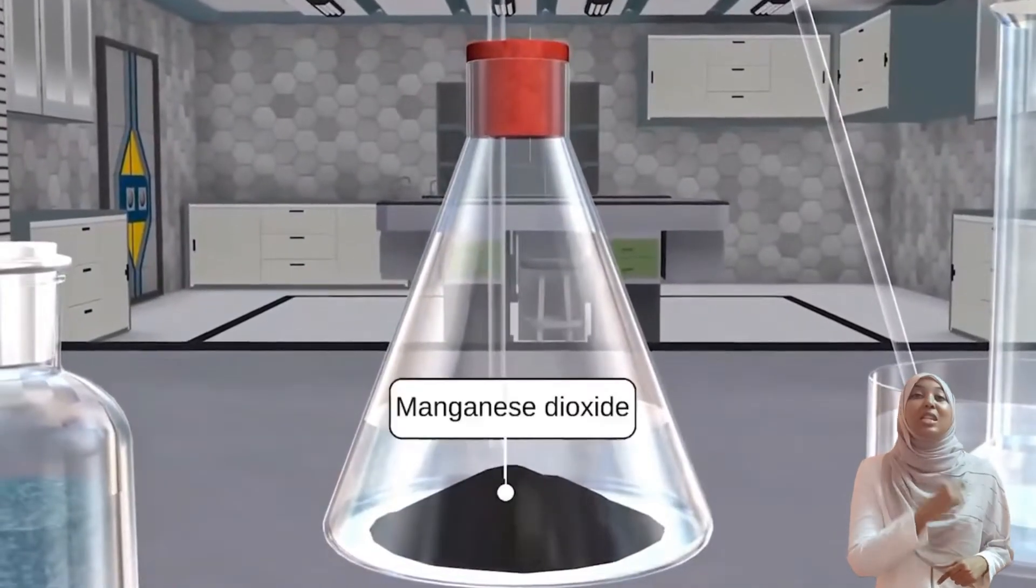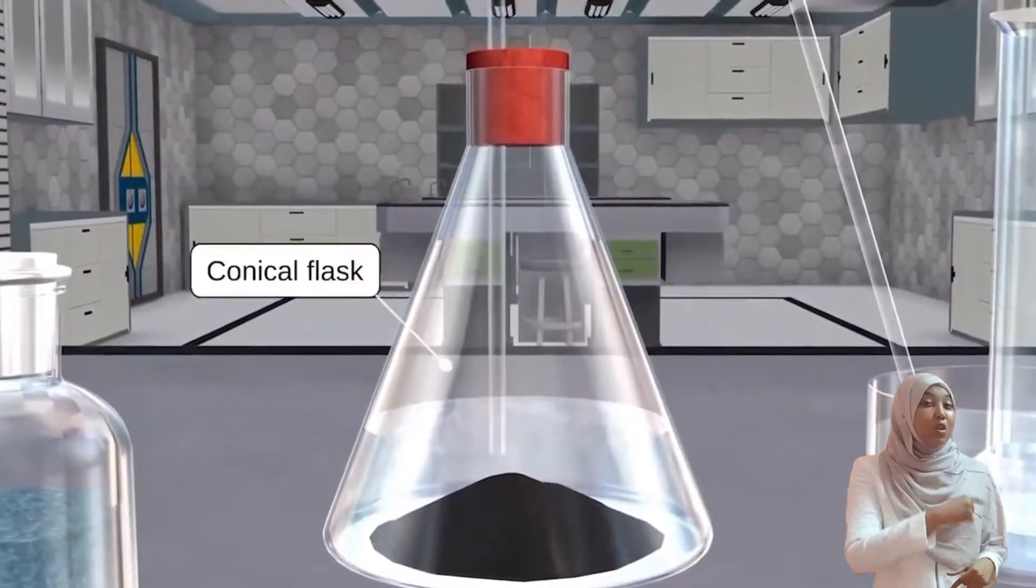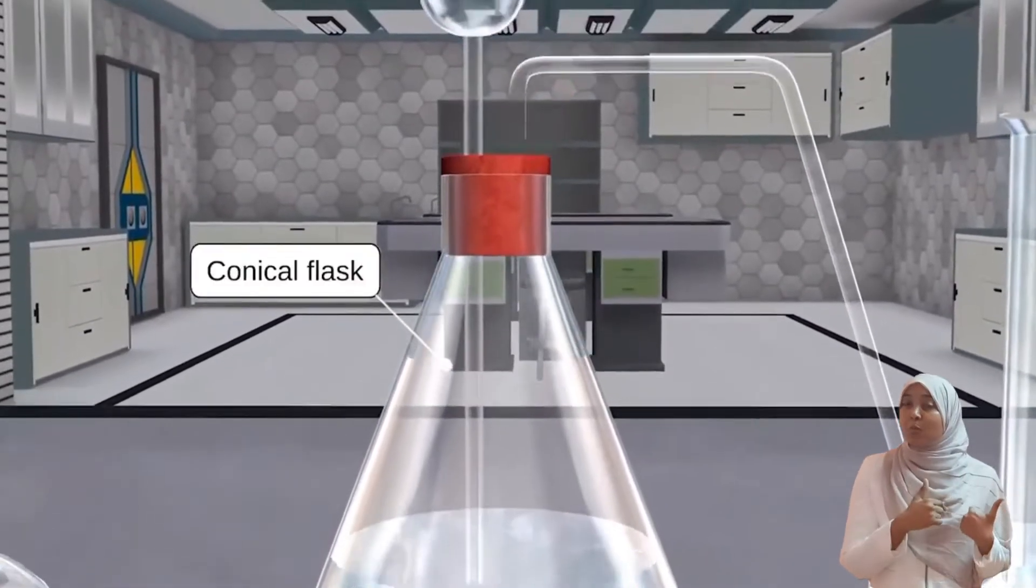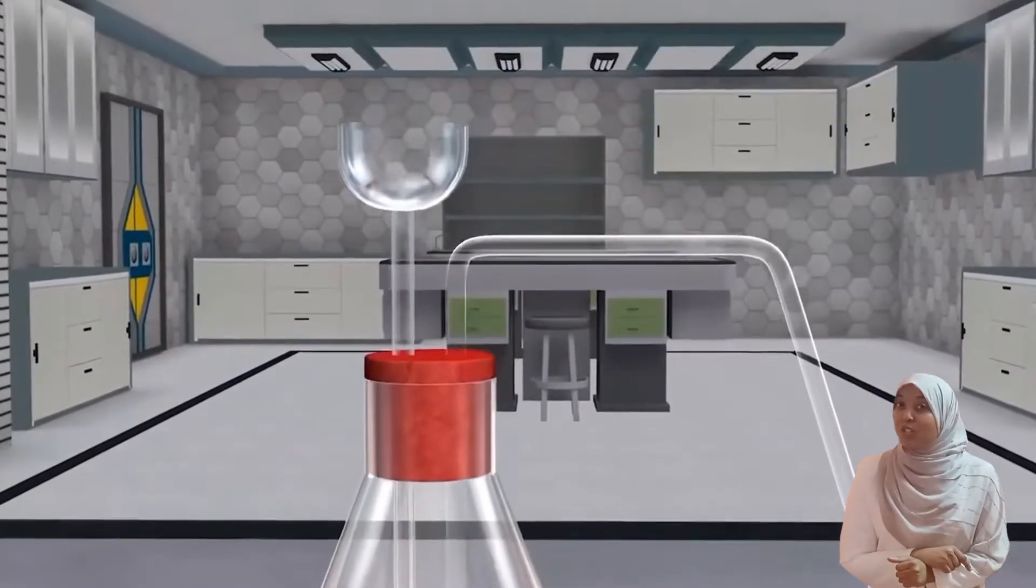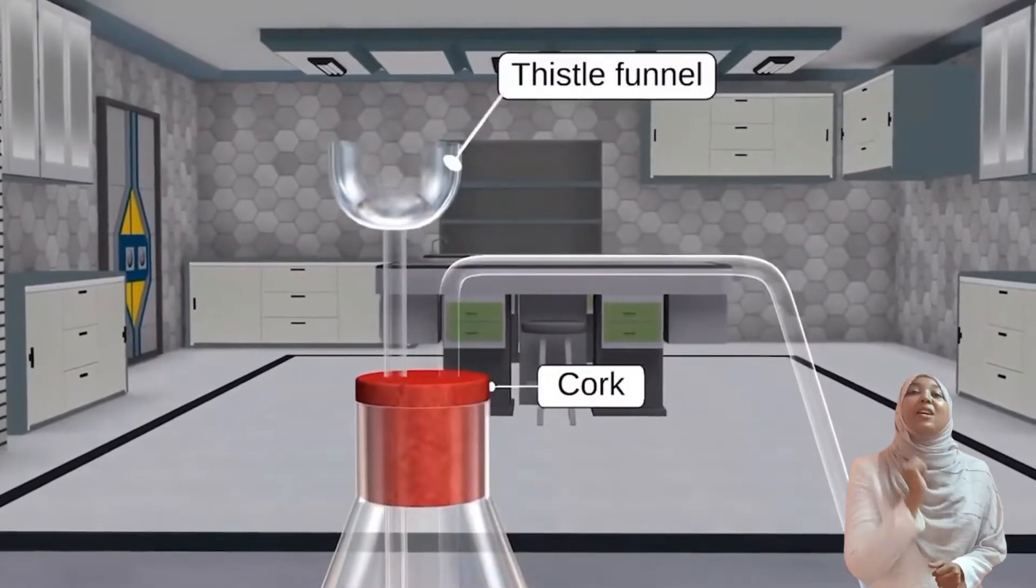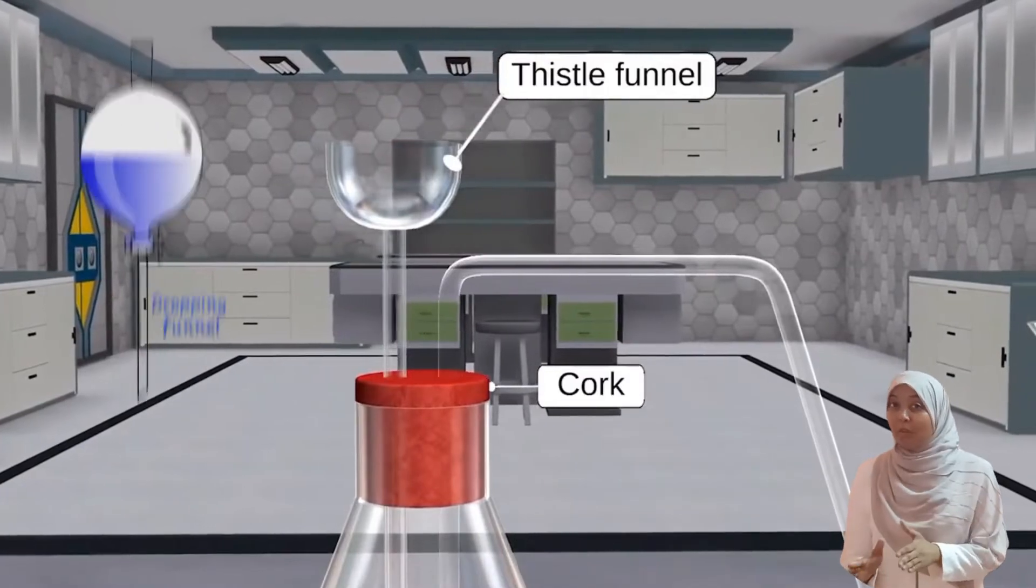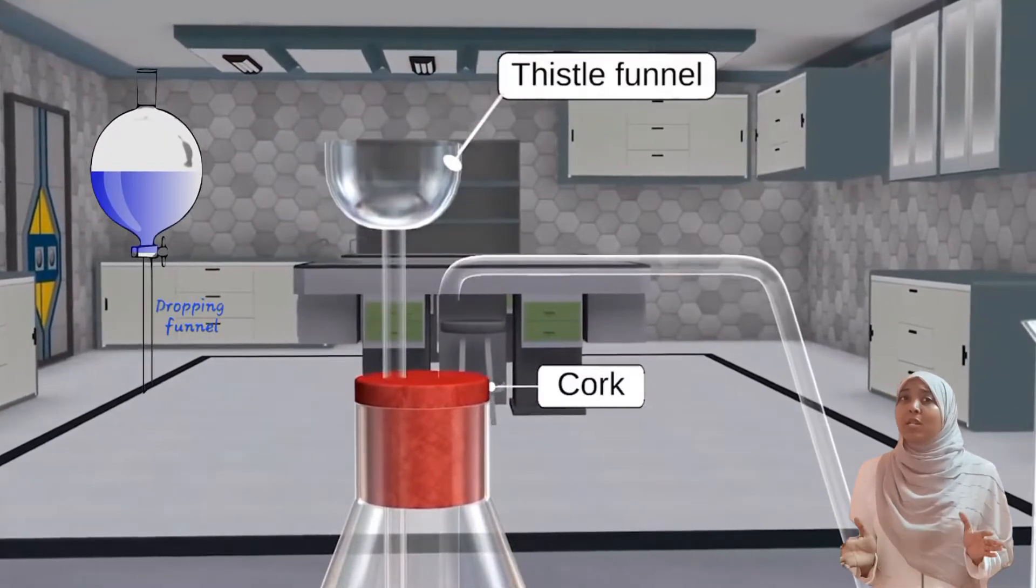In this reaction, the catalyst that is used is manganese 4 oxide (MnO2), which is the black solid you see in the flask. Manganese 4 oxide is going to be in the flask, while hydrogen peroxide will be in the thistle funnel.